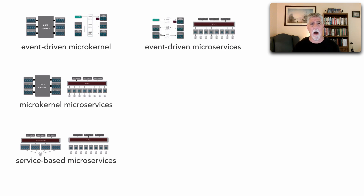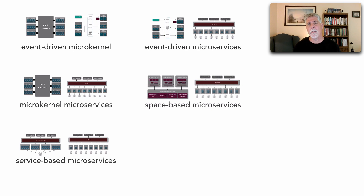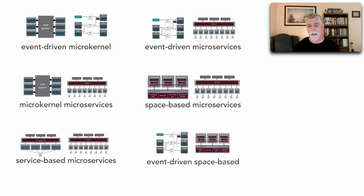Event-driven microservices is also a common hybrid, where the communication to and between services leverages event-driven architecture — with a lot of use cases around data pumps, eventual consistency, and broadcasting to other services. Space-based microservices is also another very powerful hybrid, where the processing unit within space-based architecture becomes a separately deployed microservice doing one thing really well. This is well-suited because of the volume of data in the cache within space-based architecture. And finally, event-driven space-based architecture leverages events and messaging to communicate between processing units as well as data pumps to the database.